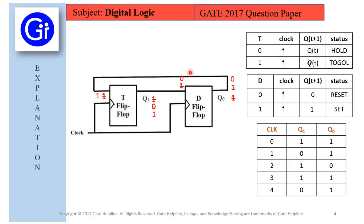Now Q1=1 is sent as input to the D flip-flop, and Q0=0 is sent as input to the T flip-flop. The T flip-flop with input 0 holds its value, so Q1 stays 1. The D flip-flop with input 1 sets the value, so Q0 becomes 1. After the third clock cycle, the outputs are Q1=1 and Q0=1.